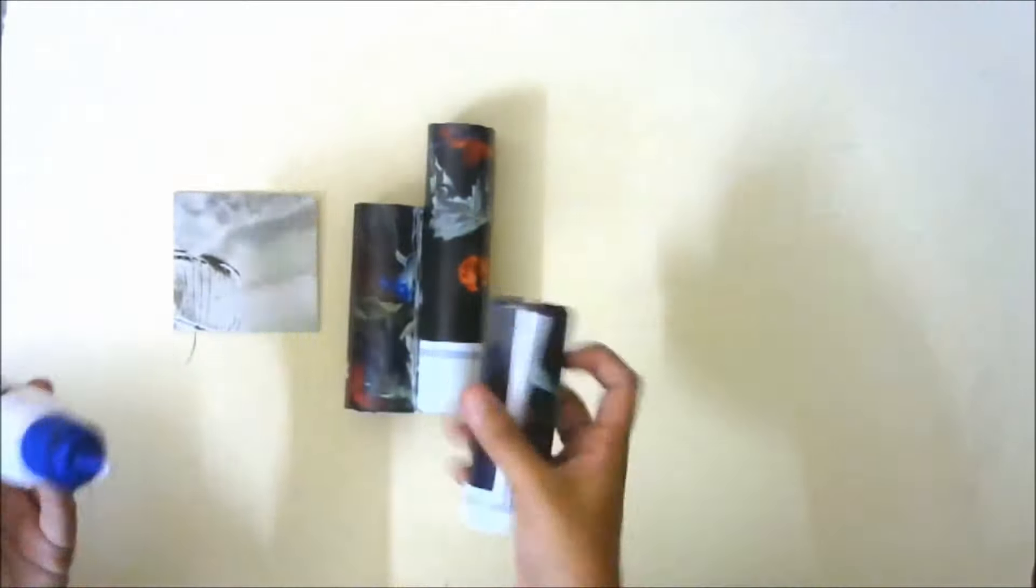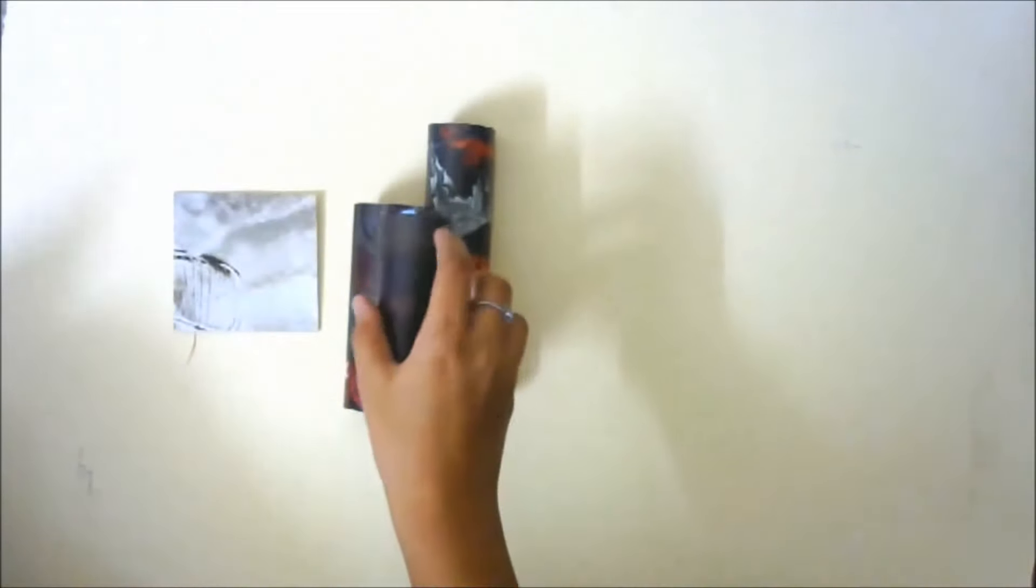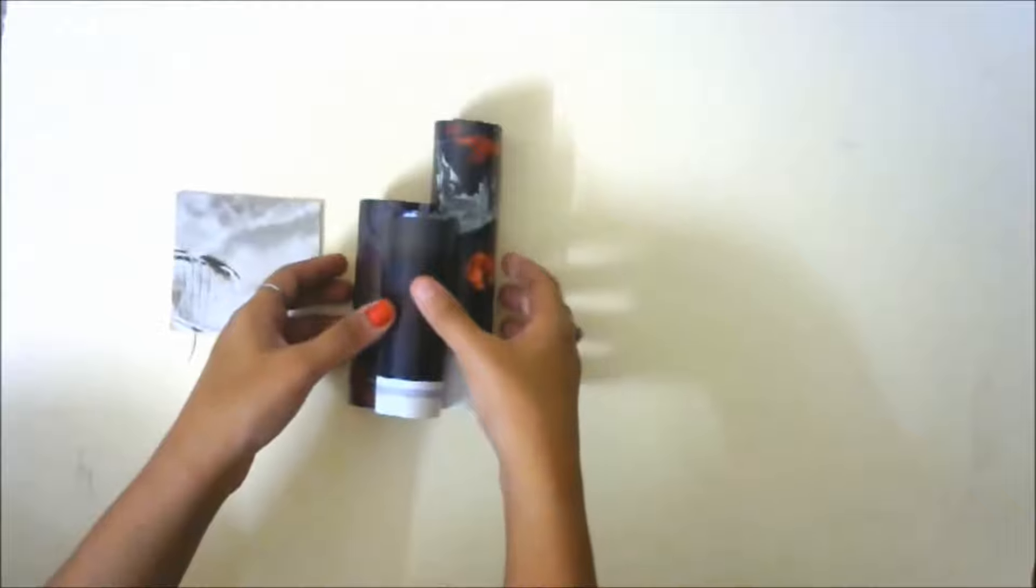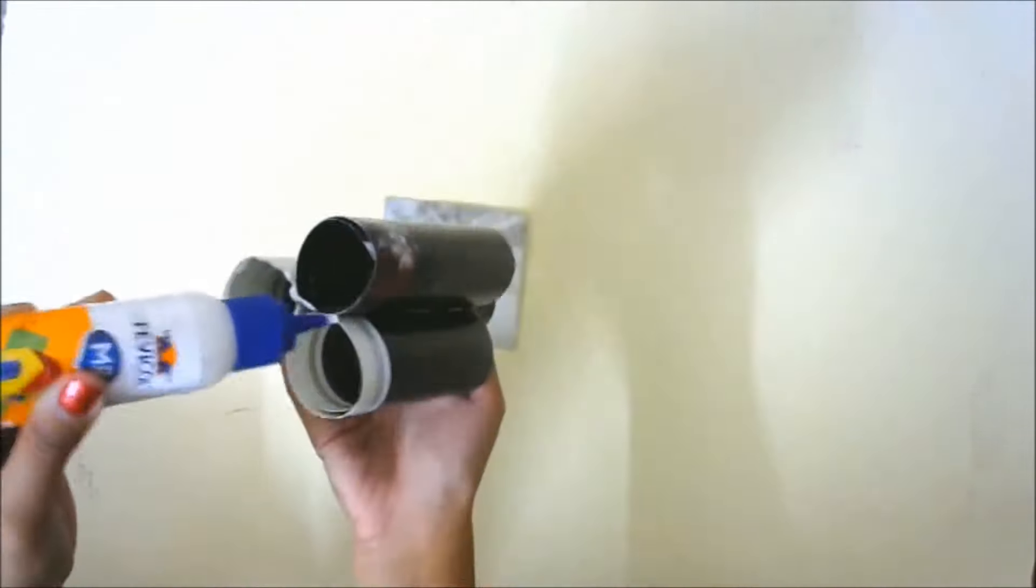That is, apply glue on the stapled end and then stick it back to the bigger one. Apply some glue at the bottom and then just stick it to the square base.